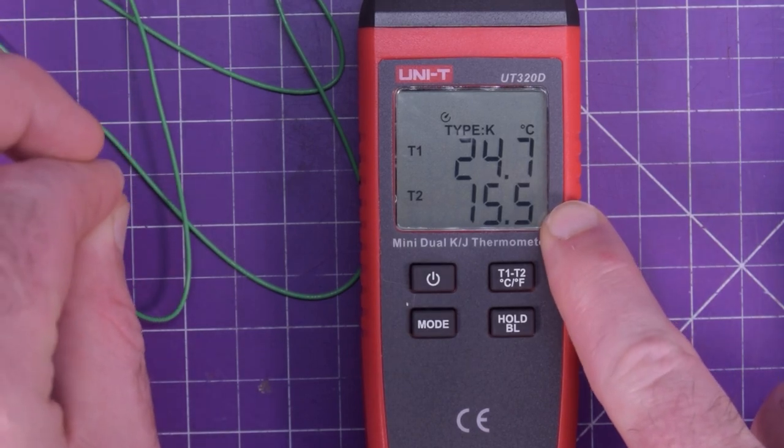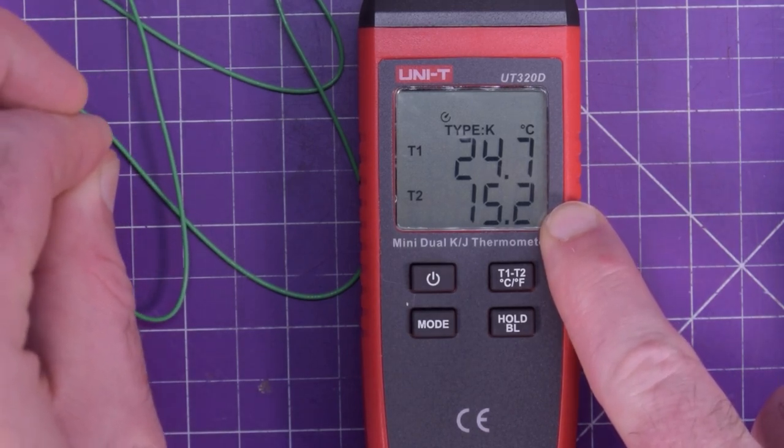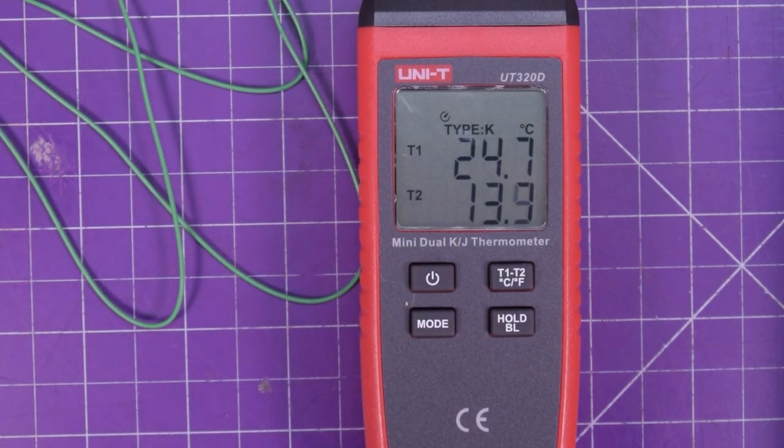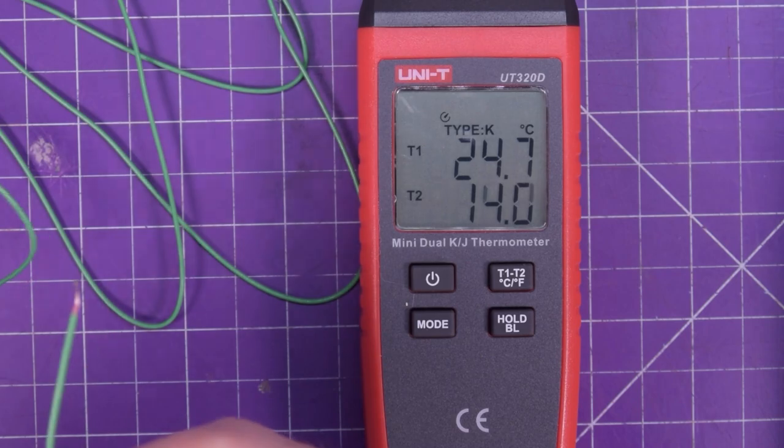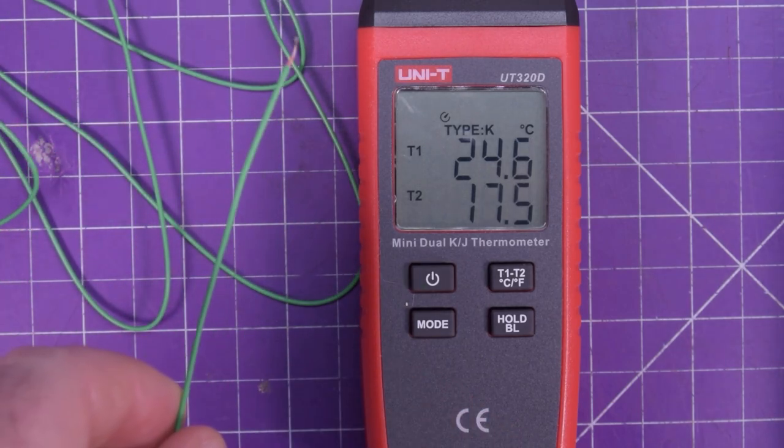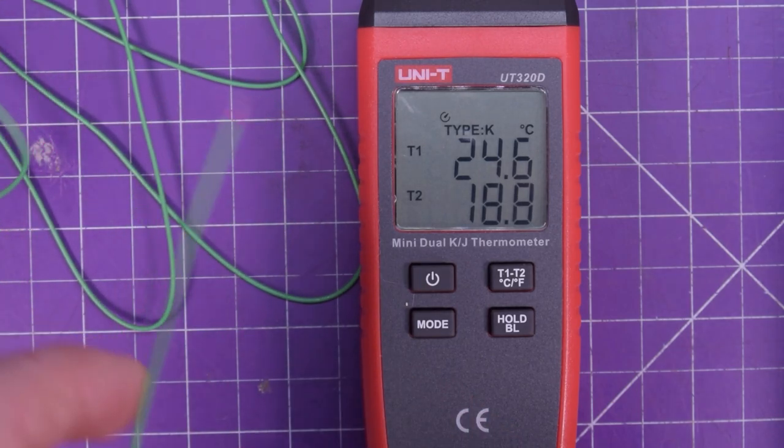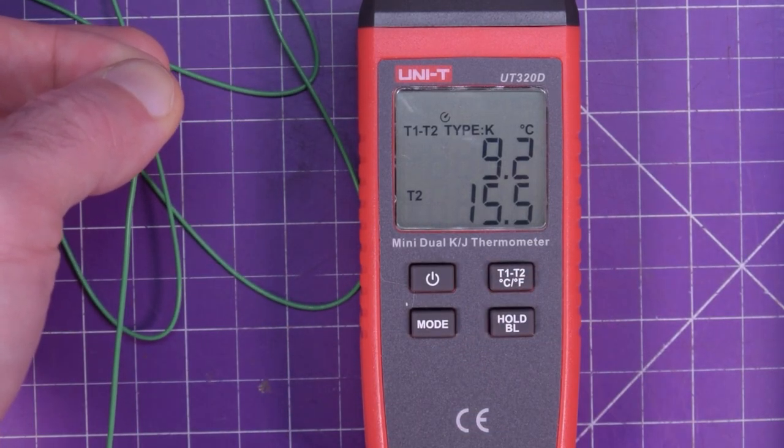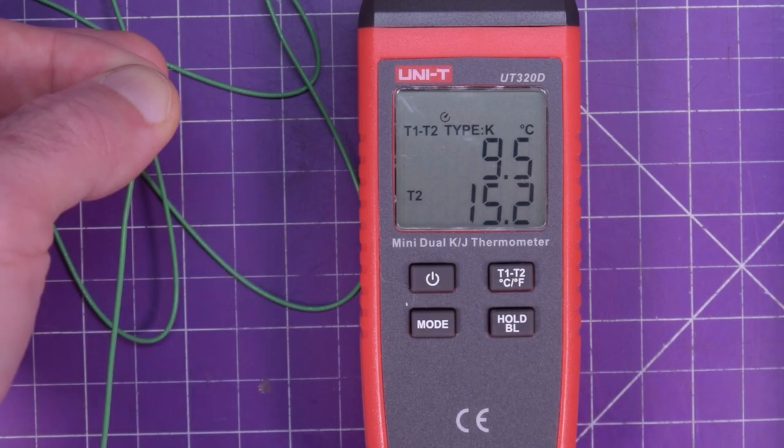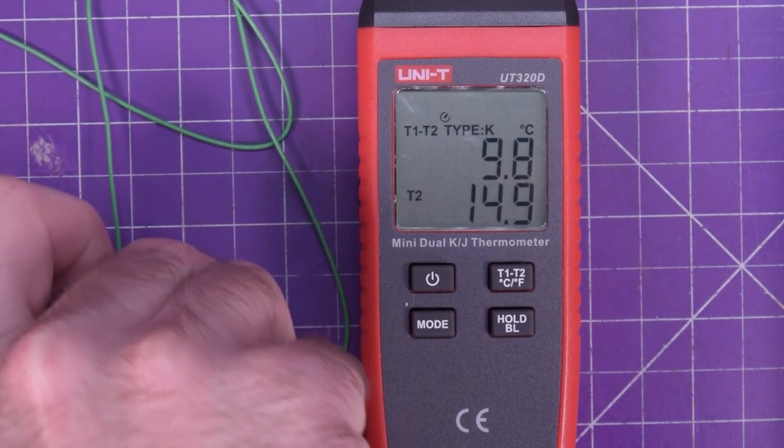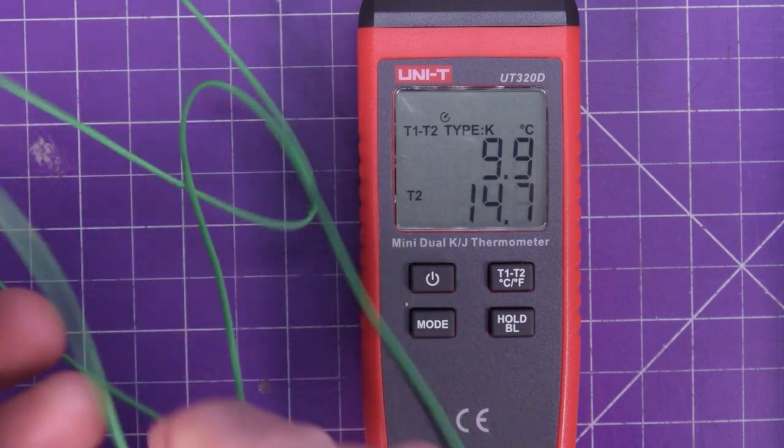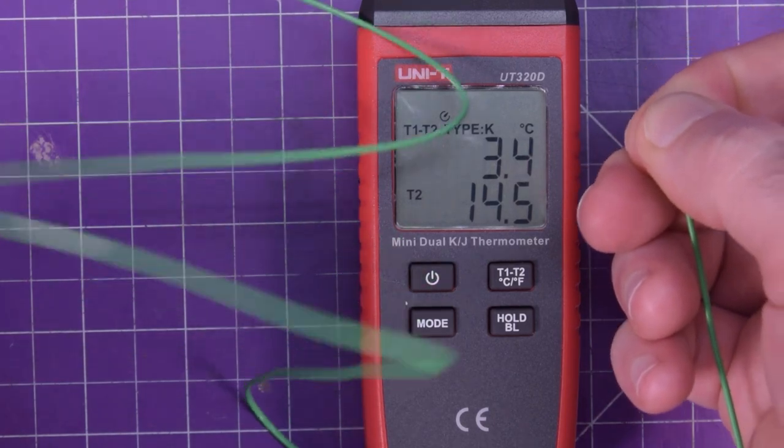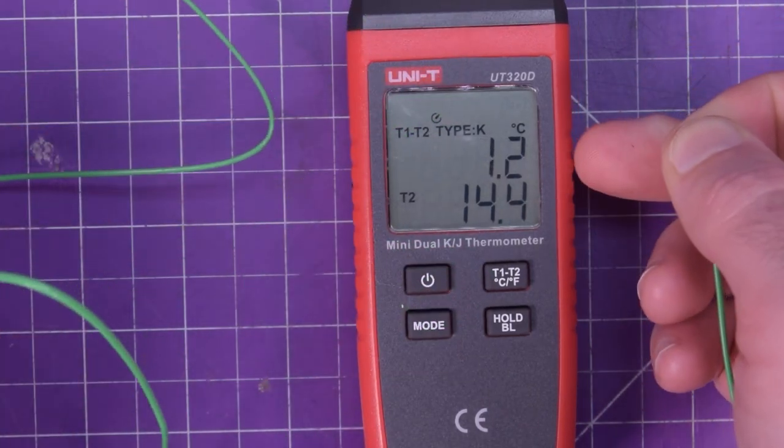Are my fingers colder than room temp? 15.3. Let me see if I go a little higher up on my arm. Yeah, that's a ridiculous cold. Okay. And now, the cool feature. T1 minus T2. And so we've got the delta. So there's the difference between the two probes. And if I warm up this probe, or cool down this probe, I should say. Okay. There we go. The difference drops.